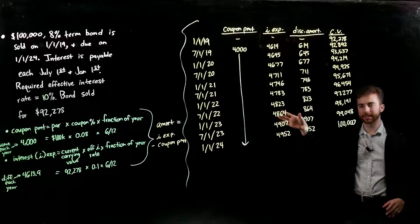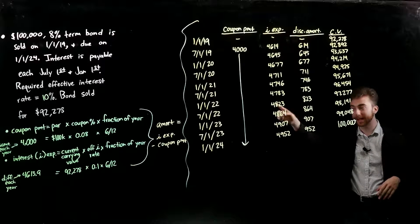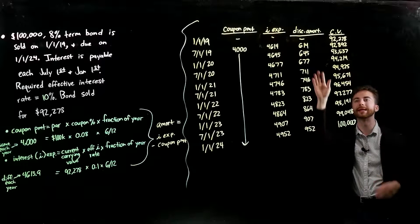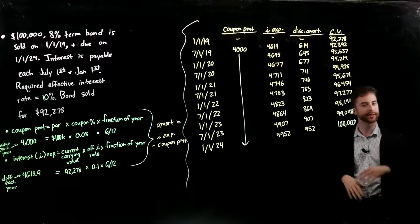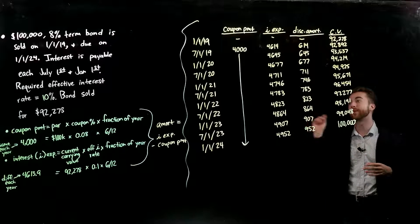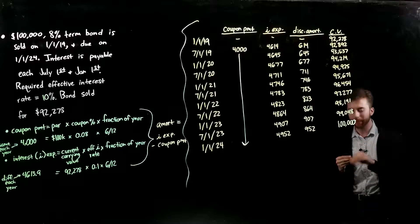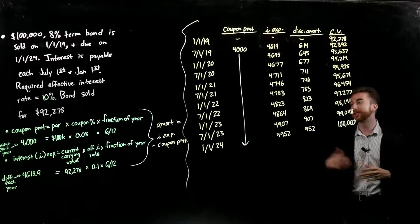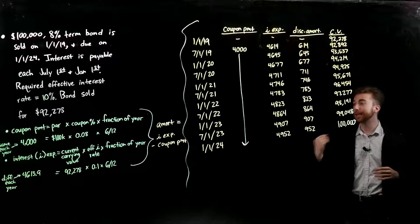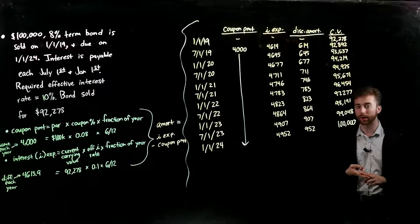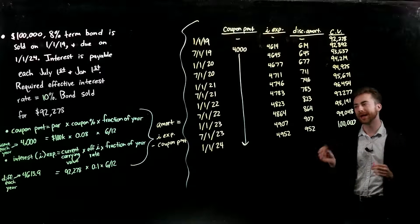Now we're going to go through this really big example. From the get go, you might think this is a huge, crazy problem — don't worry too much, it's literally the same steps we're going to go through, just compiled through the entire amortization schedule. The problem we have is a $100,000 8% term bond — that 8% is the coupon payment on the bond, what the bond actually pays the consumer who purchases it. It's sold on 1-1-2019, due on 1-1-2024, so it's about a five-year period. Interest is payable each July 1st and January 1st, so we're talking about semi-annual payments. The required effective interest rate is 10%, and the bond sold for $92,278.